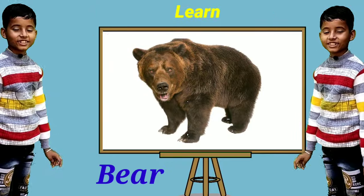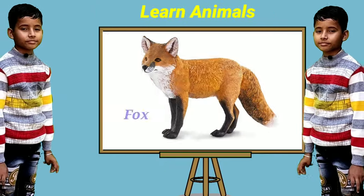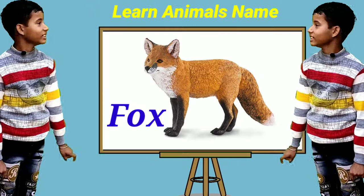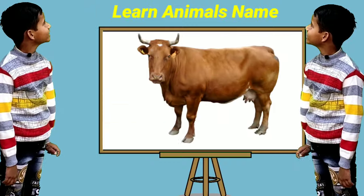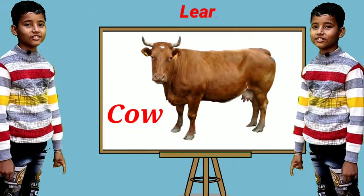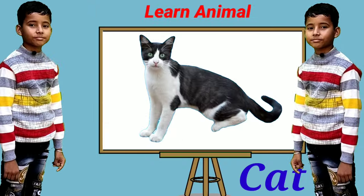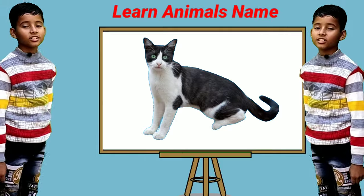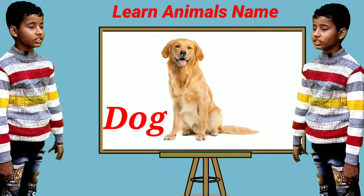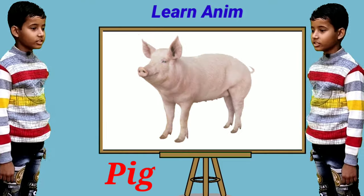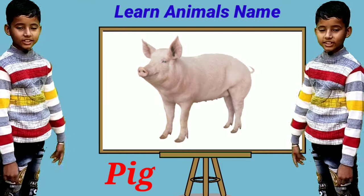This is a bear. This is a fox. This is a cow. This is a cat. This is a dog. This is a lion.